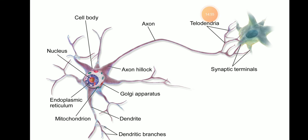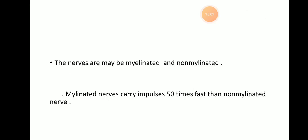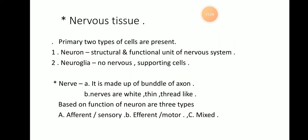Neurons are divided into three types based on their function. The first type is the afferent — meaning sensory — neurons, which carry impulses from sensory organs towards the brain. The next type is the efferent neuron, which carries impulses from the brain to the receptor organ.